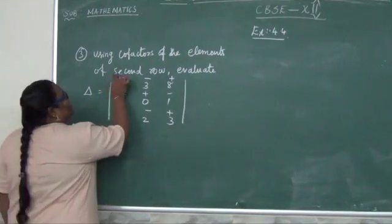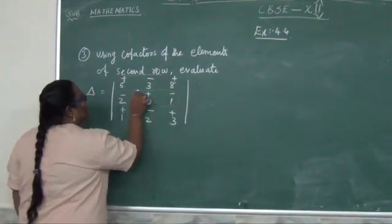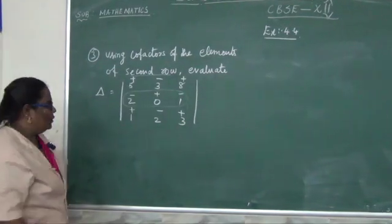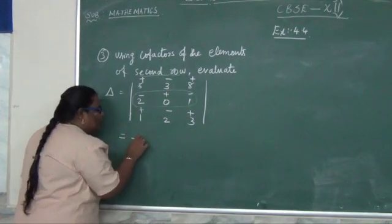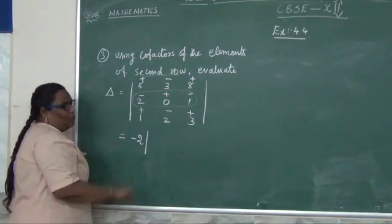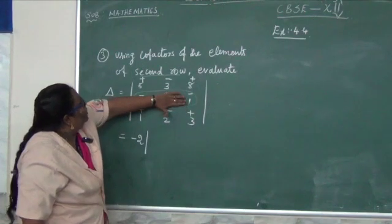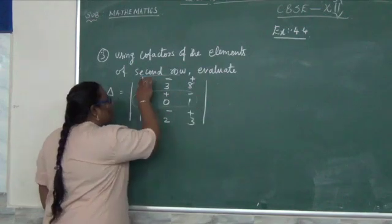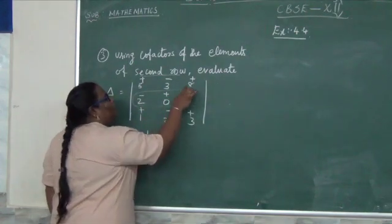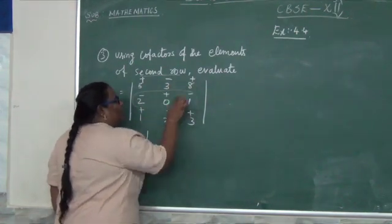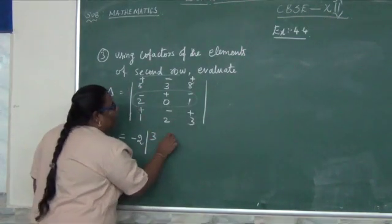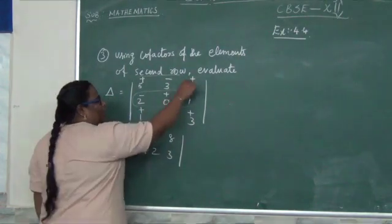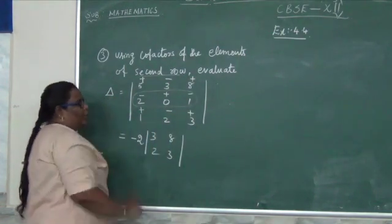They are asking about the second row. This is the second row. You can evaluate it. This is the cofactor of the second row alone. So you can take it as minus 2 into — you can leave that corresponding row and column. The numbers you are having are 3, 8, 2, 3. You do not take the cofactor sign; you take the number alone.